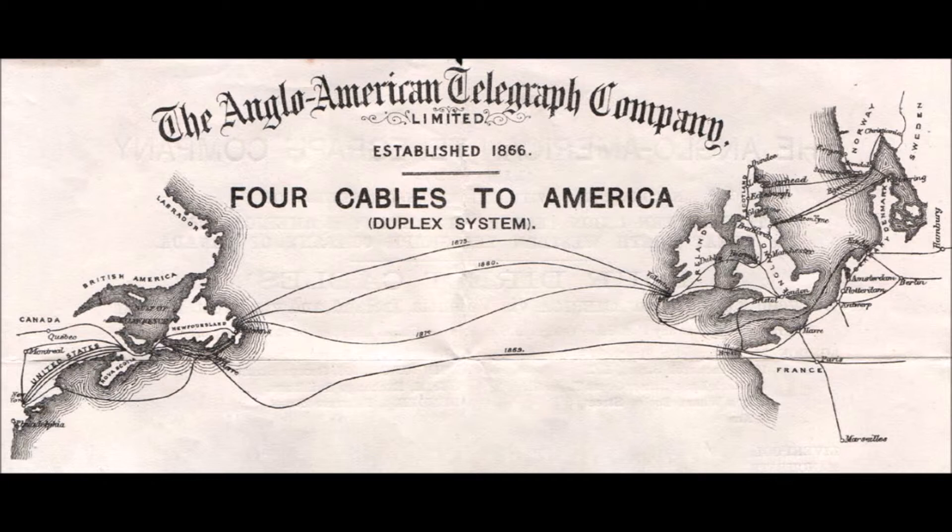Before Thompson's appointment to the project, the cable was not transmitting the signal properly, and communication became difficult. Thompson realized that by using a mirror galvanometer, he could amplify the signal at 10 times the normal rate, and normal communication could be resumed.